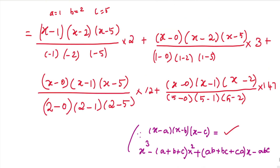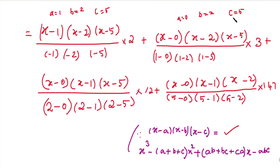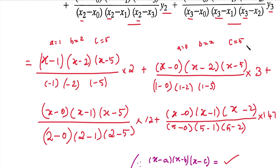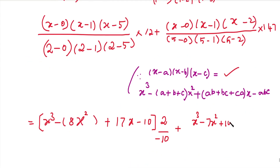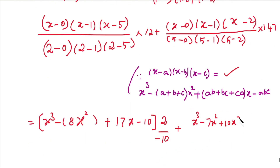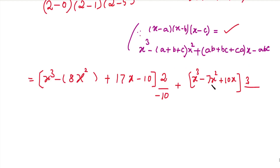For the second term, a equals 0, b equals 2, c equals 5. Expanding: x cube, minus a plus b plus c equals 7, so minus 7 x square, plus ab plus bc plus ca: since a equals 0, ab and ca are 0, remaining is bc equals 10, so plus 10x, minus abc equals 0. The whole is multiplied by y1 equal to 3, divided by denominator 1 into minus 1 into minus 4 equal to 4.